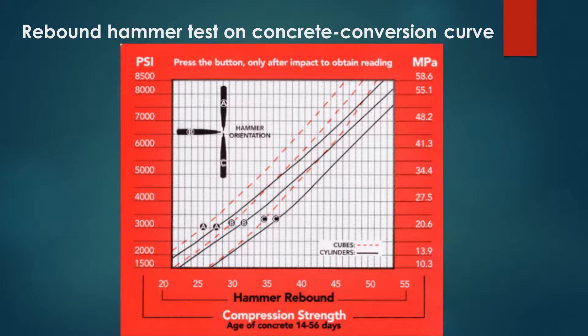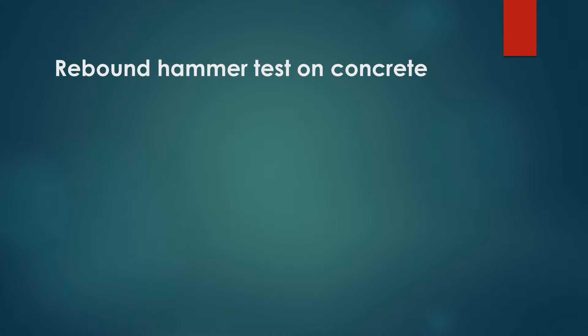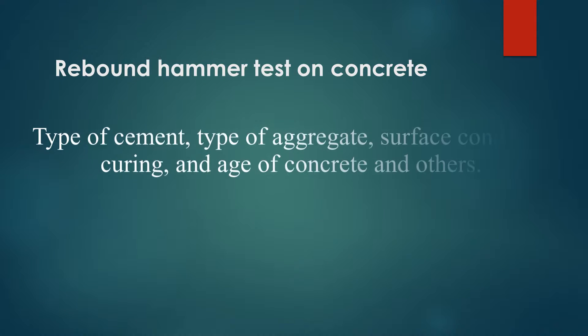In general, the rebound magnitude will increase by the increase of concrete compressive strength. However, it is affected by various parameters such as type of cement, type of aggregate, surface condition, curing, and age of concrete and others.